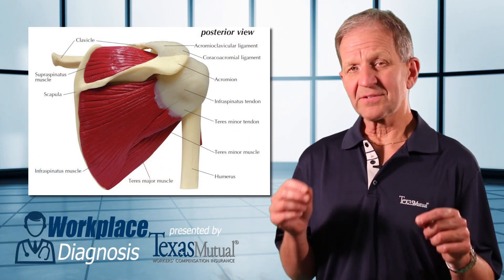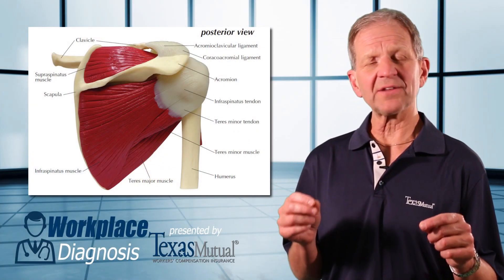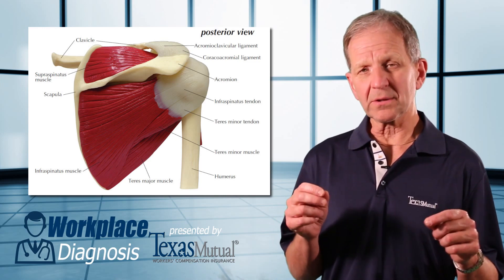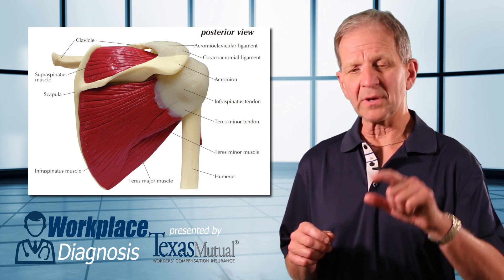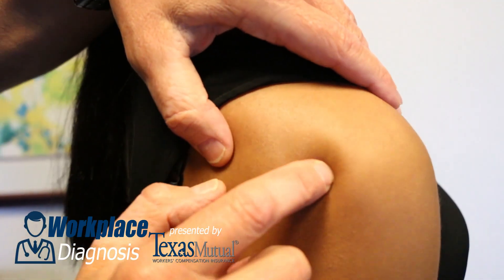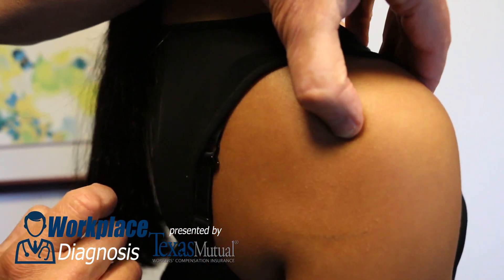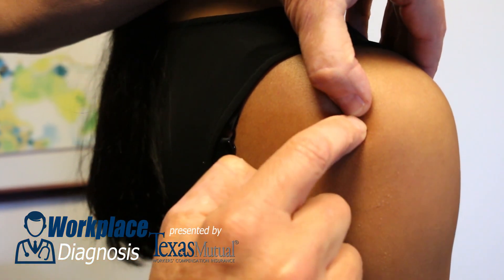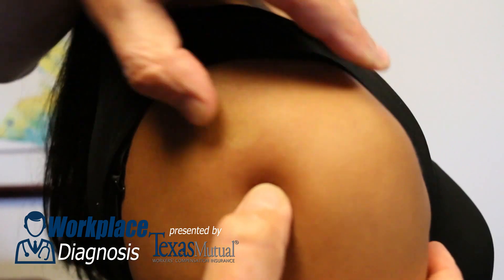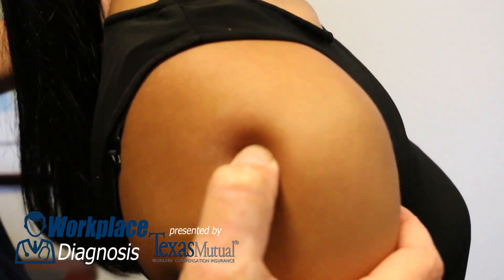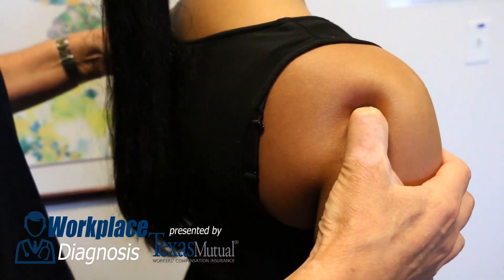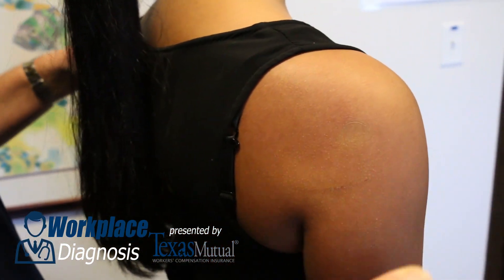The rotator cuff tear has an anatomic area. Point localized tenderness is important. Look at her shoulder — look at the acromion, the posterior edge, look at her humerus — and right where the tear should be, she should have point localizable tenderness. Document this on your exam.